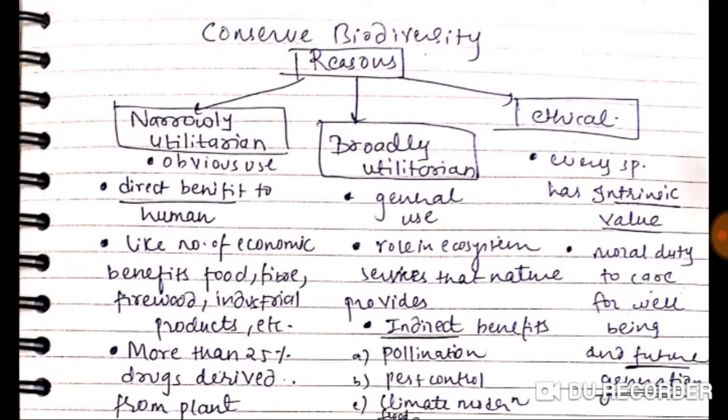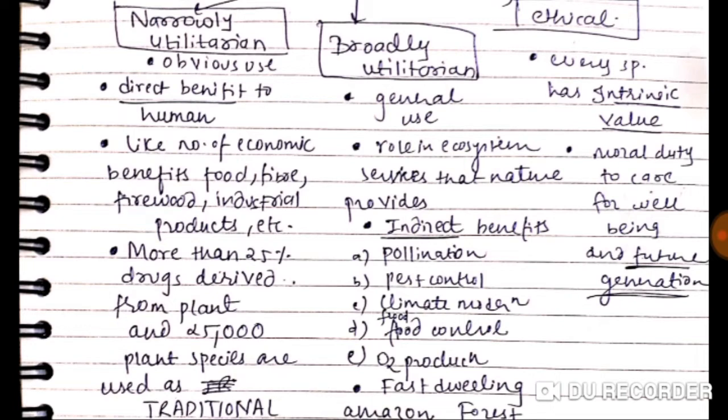The reasons to conserve biodiversity include three categories. Number one is narrowly utilitarian — conservation for the obvious, direct benefit of humans, such as economic benefits like food, fiber, firewood, and industrial products.